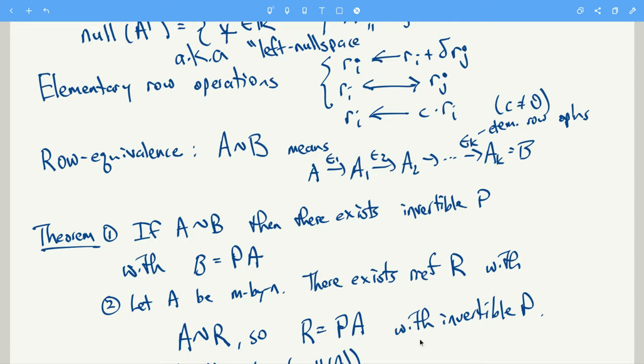And then the second part of the theorem says, well, not only that, but if you have an M by N matrix, there is a row reduced echelon form matrix R that is row equivalent to A. In other words, we can write R is P times A where P is invertible.